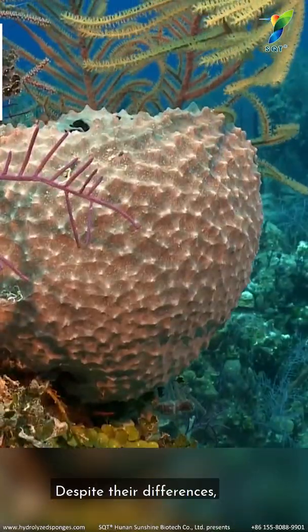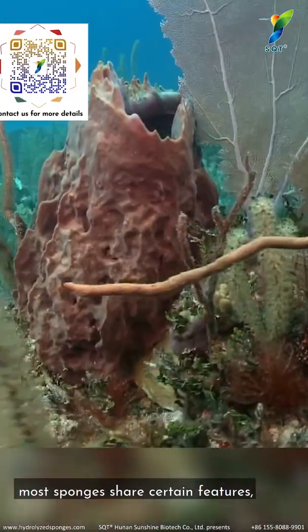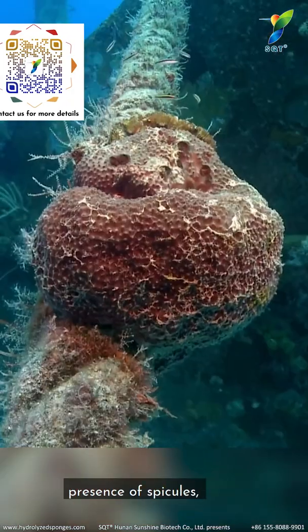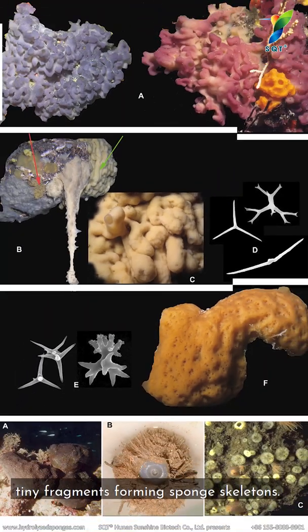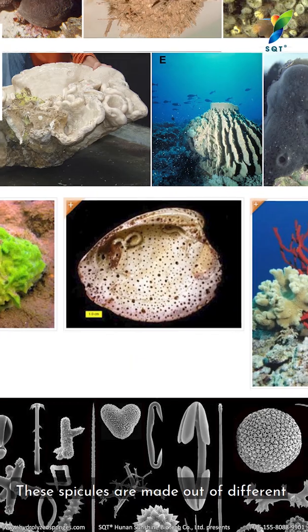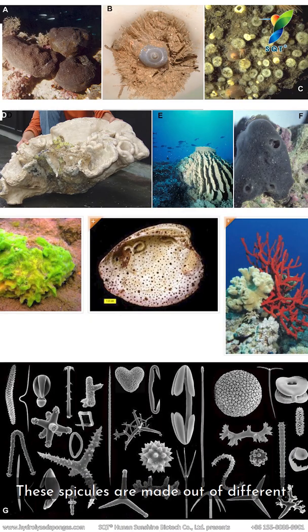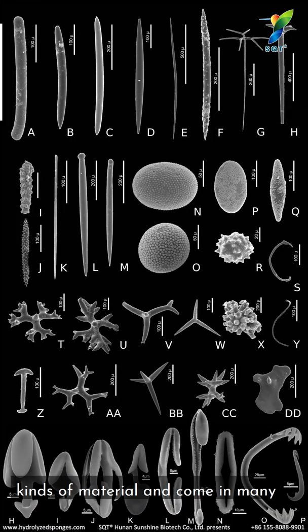Despite their differences, most sponges share certain features, such as the presence of speckles—tiny fragments forming the sponge skeleton. These speckles are made of different kinds of materials and come in many shapes and sizes.